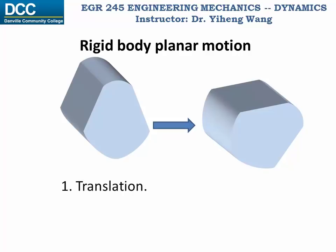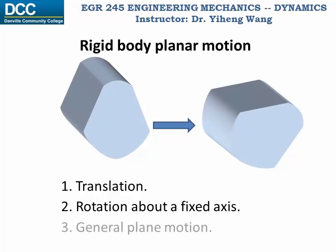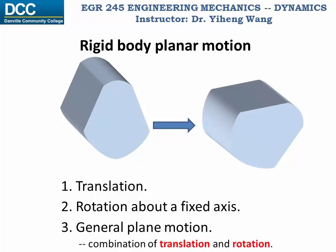There are three types of rigid body planar motion: translation, rotation about a fixed axis, and lastly the general plane motion, which is simply when the rigid body is undergoing both translation and rotation simultaneously.